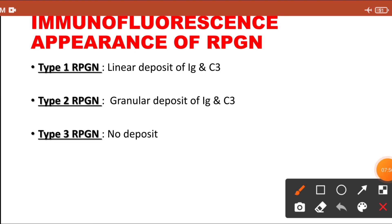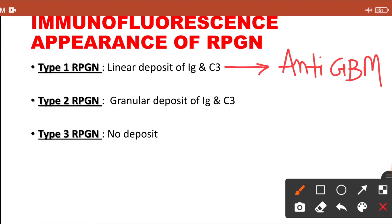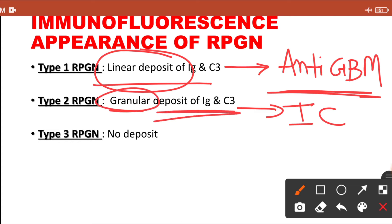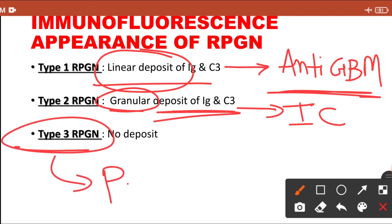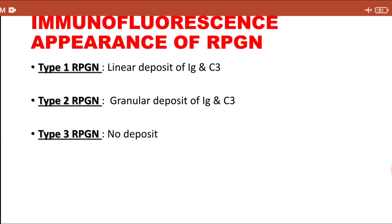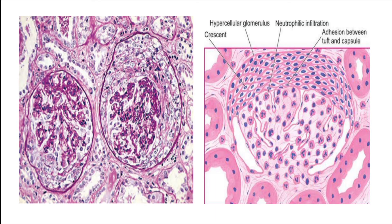In immunofluorescence microscopy, if it is type 1 due to anti-GBM antibody, the immunoglobulin and complement are deposited as a linear deposit. If it is type 2, immune complex induced RPGN, a granular immunoglobulin and complement deposit is seen. Type 3, pauci-immune, has no immunoglobulin or complement deposition — it is not antibody mediated. Only in types 1 and 2 are deposits seen; in type 3, no deposit is present.